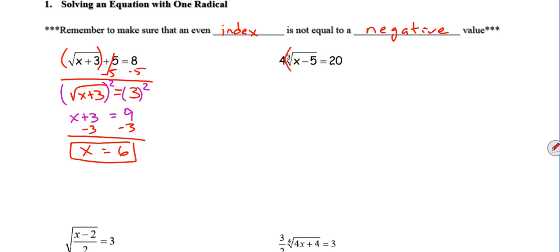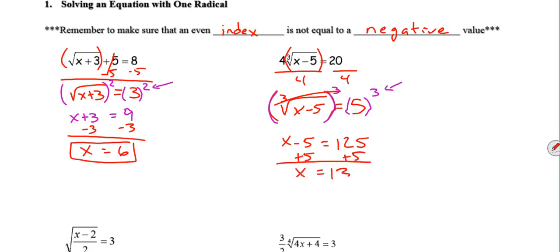Again, we want to isolate this value. So first I'm going to divide both sides by 4. I get the third root of (x-5) equals 5. Now, since the index is the third power, I'm going to raise it to the third power. Square roots get raised to the second power, cube roots get raised to the third power. So once I do that, these will cancel each other out and we're left with x-5 equals 125 because that's an exponent—5 times 5 times 5. We'll solve this by adding 5 to both sides. x equals 130.